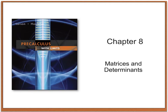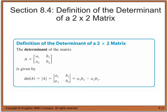Back in section 8.3, you actually learned how to calculate the determinant, we just didn't call it the determinant. The determinant of the matrix is usually denoted by det(A) or it looks like the absolute value of a capital A. You calculate the determinant by taking the difference of the two diagonals — A1 times B2 minus A2 times B1.